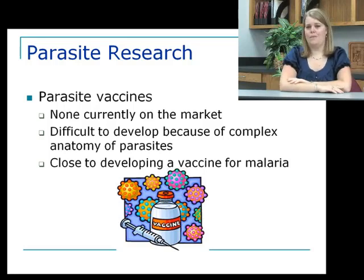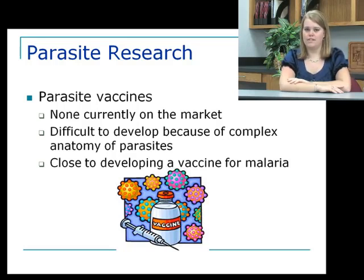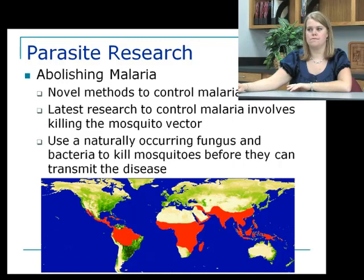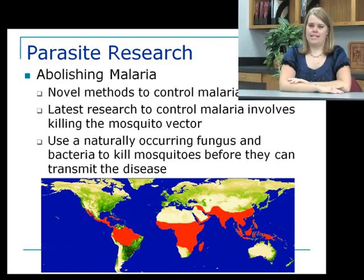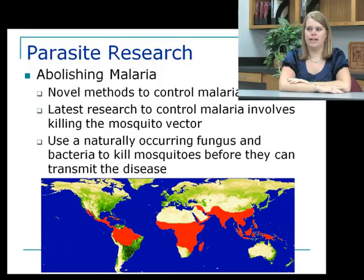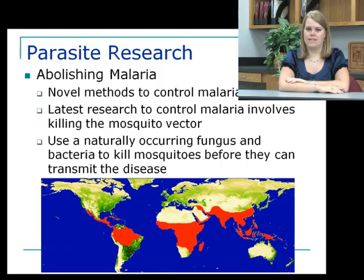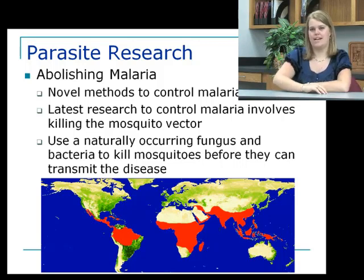You may wonder why we can't just develop a vaccine for parasites. The problem is that parasite anatomy is actually very similar to mammal or animal anatomy, so we've had difficulty developing vaccines that will attack a parasite but not harm the host. They are currently working on a vaccine for malaria, but it is still in development. Regarding malaria — the number one killer of people in the world — the latest research involves introducing a fungus and bacteria onto the mosquito, which actually kills it before it can transmit the disease to humans. It's all very new and no one knows yet if it will work, but it is an example of using alternative methods besides pesticides to control parasites.